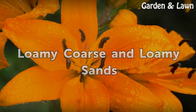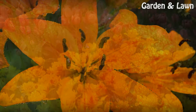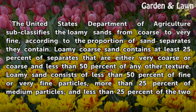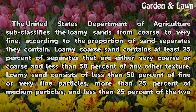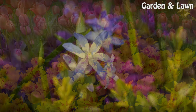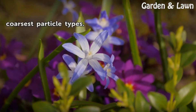The United States Department of Agriculture subclassifies the loamy sands from coarse to very fine, according to the proportion of sand separates they contain. Loamy coarse sand contains at least 25% of separates that are either very coarse or coarse and less than 50% of any other texture. Loamy sand consists of less than 50% of fine or very fine particles, more than 25% of medium particles, and less than 25% of the two coarsest particle types.